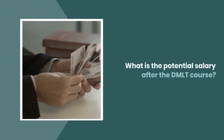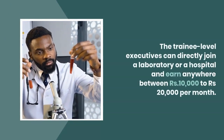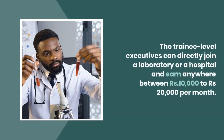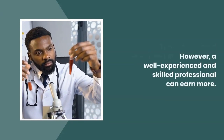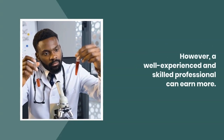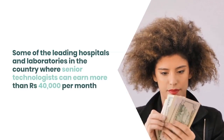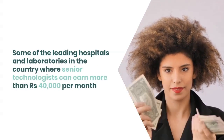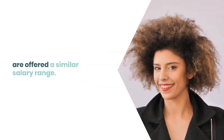What is the potential salary after the DMLT course? Trainee-level executives can directly join a laboratory or hospital and earn anywhere between 10,000 to 20,000 rupees per month. A well-experienced and skilled professional can earn more. The government offers salaries between 30,000 to 40,000 rupees per month to DMLT holders, and senior technologists at leading hospitals and laboratories can earn more than 40,000 rupees per month.